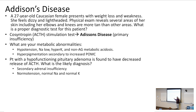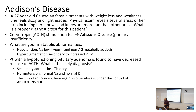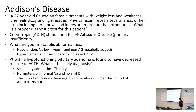Why in secondary adrenal insufficiency are sodium and blood pressure normal, unlike in primary? That goes back to the key physiologic concept that the glomerulosa is under the control of angiotensin II. Who cares if ACTH is not there? The glomerulosa is going to be under the control of angiotensin II. So in secondary adrenal insufficiency, you are not going to have issues of salt wasting. Important concept: glomerulosa is under the control of angiotensin II.